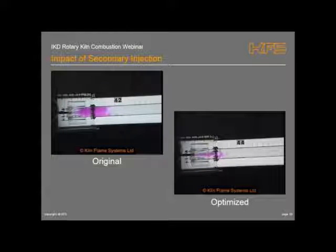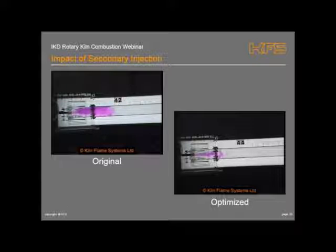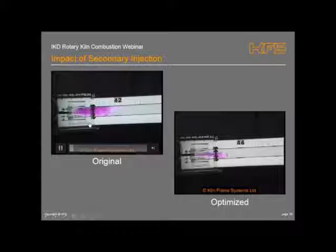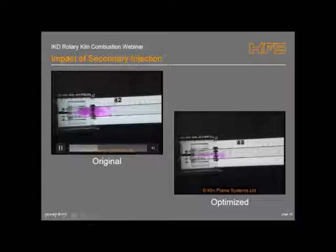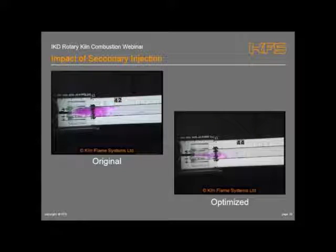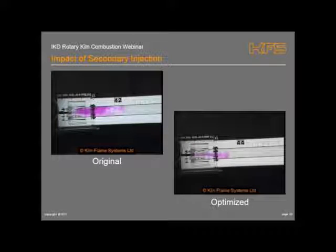Here's an example of what happens if you're injecting secondary fuels into the kiln in an unbalanced way. Again, this is the acid-alkali modelling where the pink represents where fuel and air are mixing. The only difference in design between the two images is that the injection design - the actual size of the pipe injecting the secondary fuel - has been changed, with everything else remaining the same. You can immediately see that incorrect design of secondary injections can have an impact on flame stability, strain control, and kiln operation. All these factors need to be evaluated together.